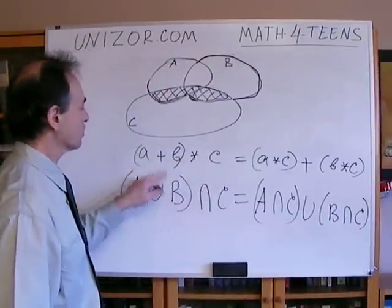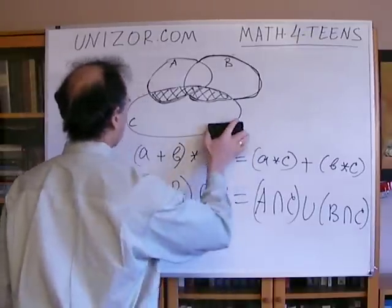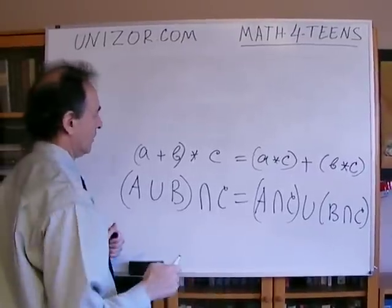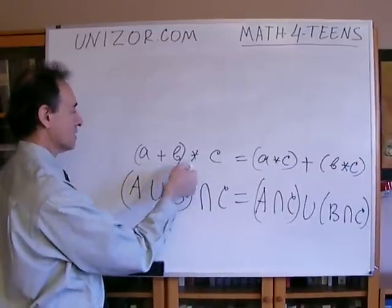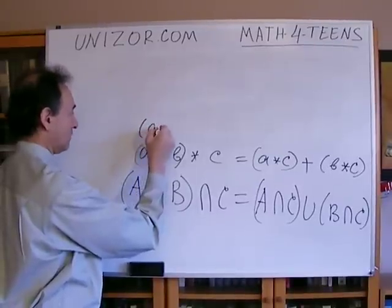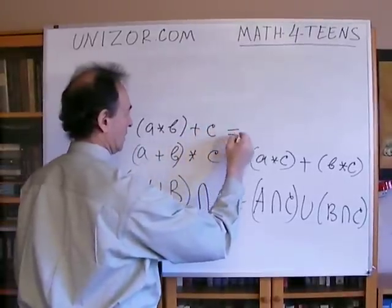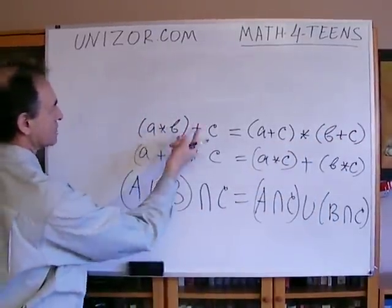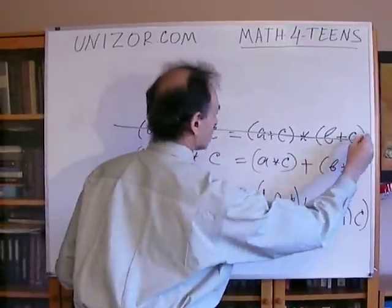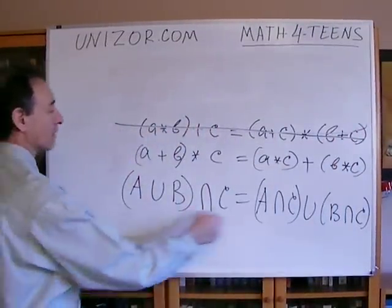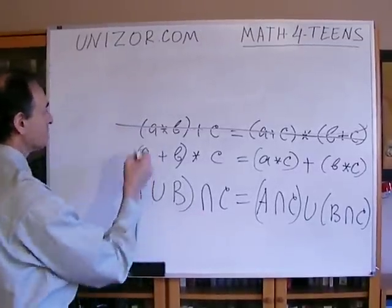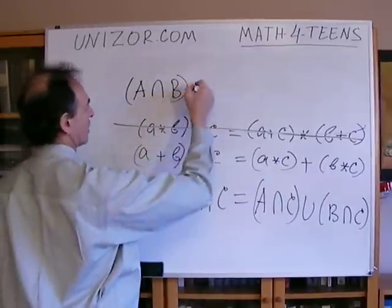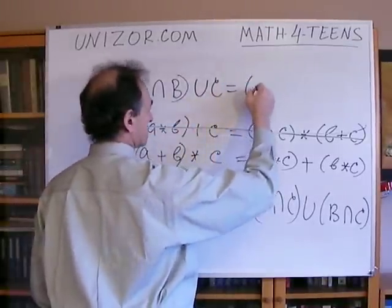What's interesting and kind of surprising is that a similar distributive law of multiplication against summation is not really true in arithmetic if you reverse plus and multiplication. This is definitely not true in arithmetic. However, what's interesting is that among sets, with union and intersection, a similar formula is actually true: instead of union I'm using intersection, and instead of intersection I'm using union, and this is actually a true statement.